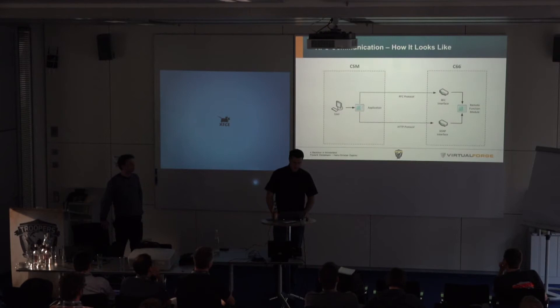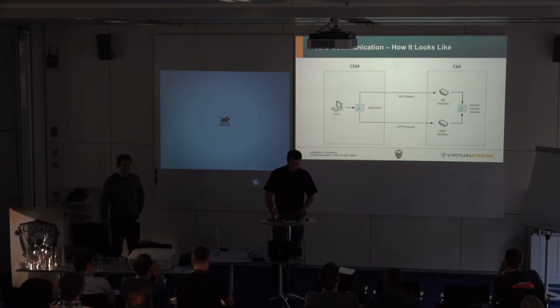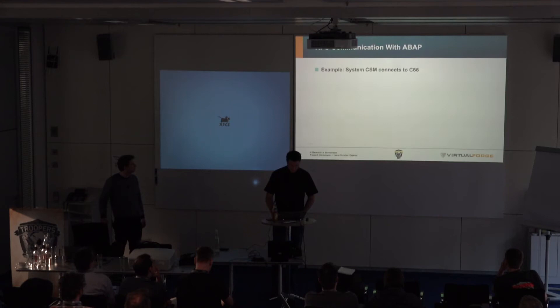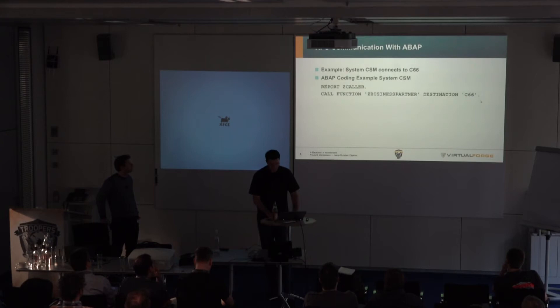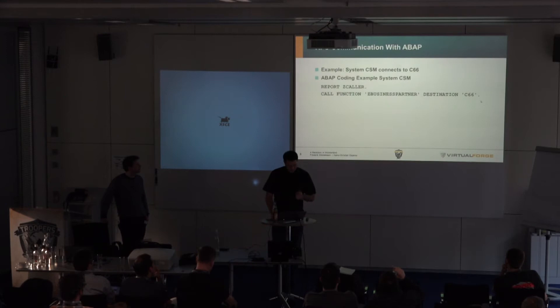From a technical point of view, I can connect two systems. Here I have an example Solution Manager CSM and an example ECC 6 EHP 6 configured with SID C66. You can also run that via HTTP, but we'll focus on the RFC protocol itself within the ABAP stack. For the connection from CSM to C66, within ABAP it looks like this: you have a call function, specify the function name, and then specify a destination configured within transaction SM59, where you can configure ABAP connections. For those connections, there are different possibilities for authentication.